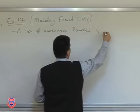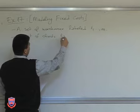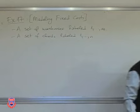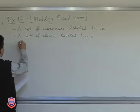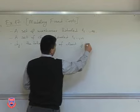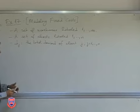Suppose that we have the following problem. We have a set of warehouses labeled one through m — so we have m warehouses — and a set of clients labeled one through n. So there are m warehouses and n clients that we need to serve. We denote by dj the total demand of client j. Each client has a certain demand: the first client has demand d1, the second d2, and so on. These are known parameters of the problem.